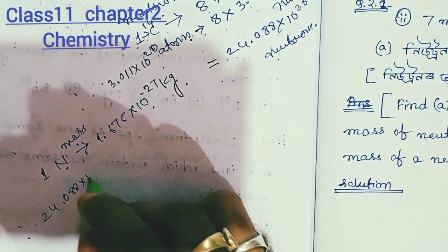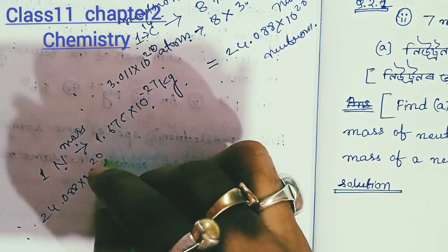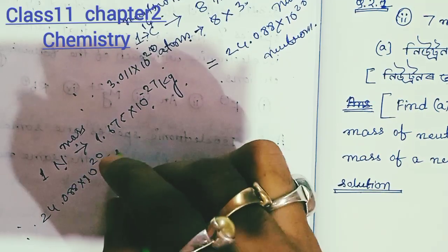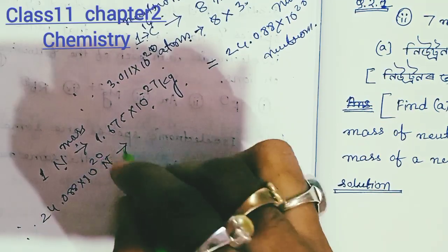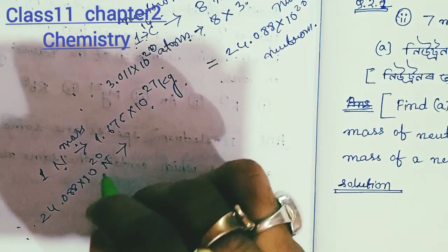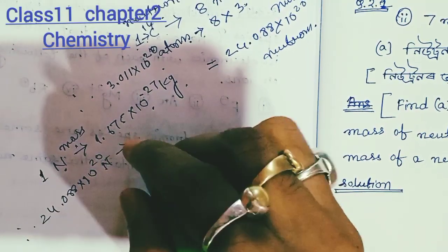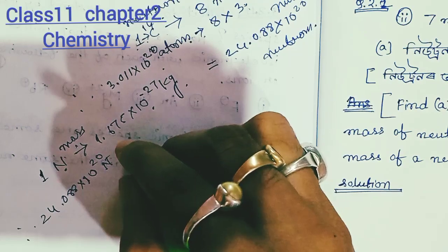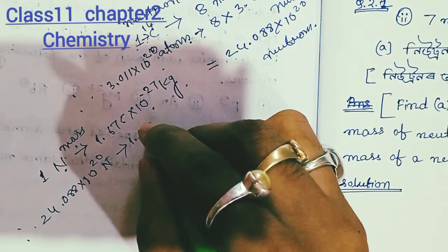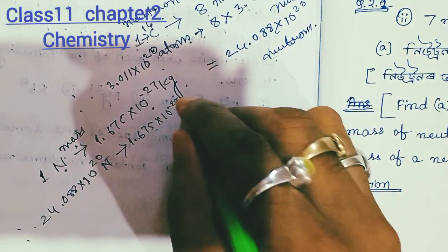24.088 × 10²⁰ neutrons — how many neutrons do we use for this? So the neutron mass calculation gives 6.7 × 10²⁰ into the mass of one neutron.